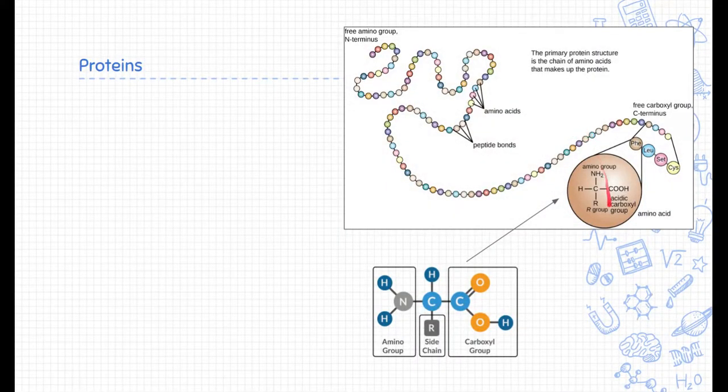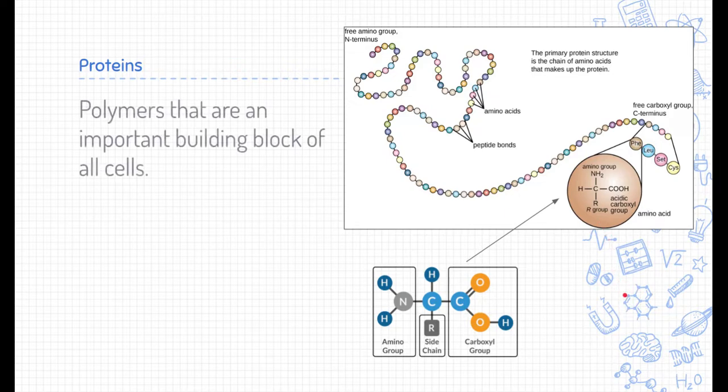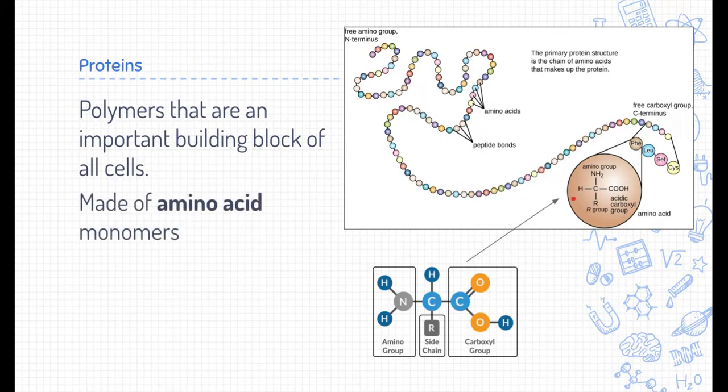Another type of natural polymer are proteins. Proteins are polymers that are very important building blocks of all cells. Now, proteins are made of monomers called amino acids.